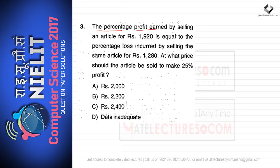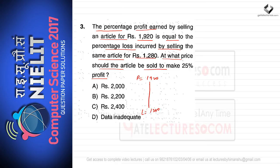The next question: the percentage profit earned by selling an article for rupees 1920 equals the percentage loss incurred by selling the same article for rupees 1280. To find the cost price, add the two selling prices and divide by two: (1920 + 1280) / 2 = rupees 1600.